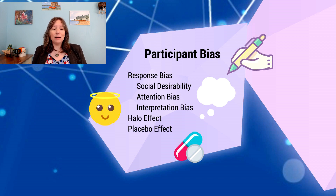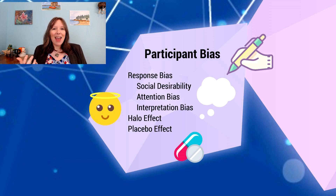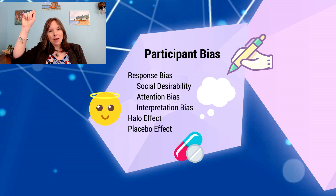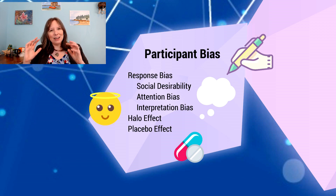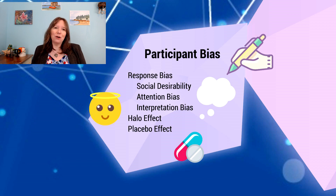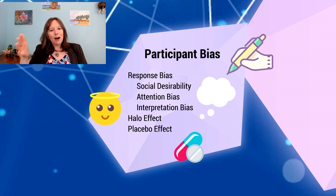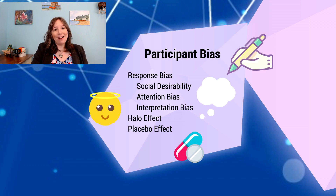Sometimes participants think they've cracked our code and just start answering all questions the same way. If they think, 'They're testing my relationship with my parents and I have a good relationship,' they'll just put 'strongly agree' on everything without reading individual questions. We see this a lot on parent and teacher surveys, where a teacher says 'this is a good student' and puts they do everything well — not really paying attention to all the nuances, since no student does everything perfectly or everything terribly.